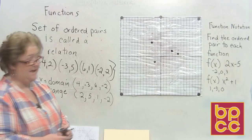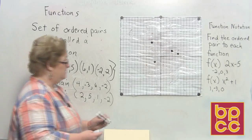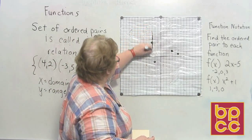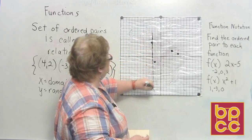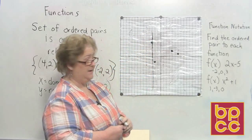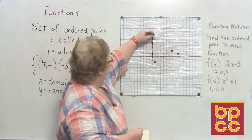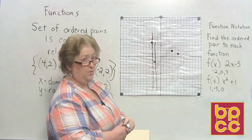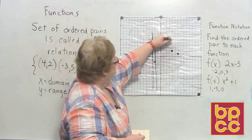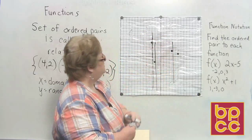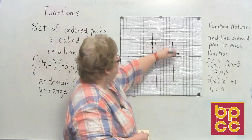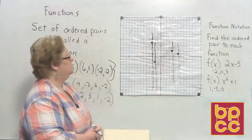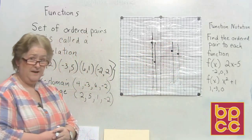Watch as I draw vertical lines down. As you can see, as I go down this vertical line there's only one point on that line. As I go down this vertical line there's only one point. Only one point there, and only one point right there. So this would be a function.